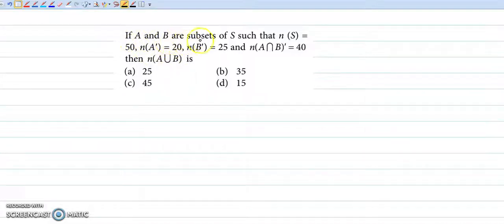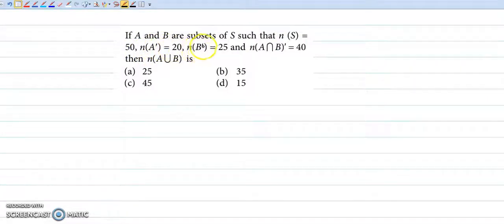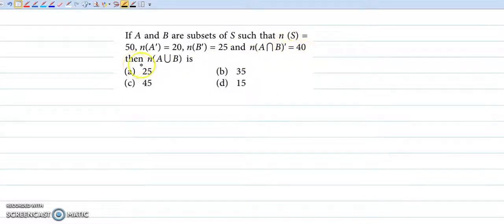If A and B are subsets of S such that number of elements in S is 50, number of elements in A complement is 20, number of elements in B complement is 25, and number of elements in A intersection B complement is 40. Find number of elements in A union B.